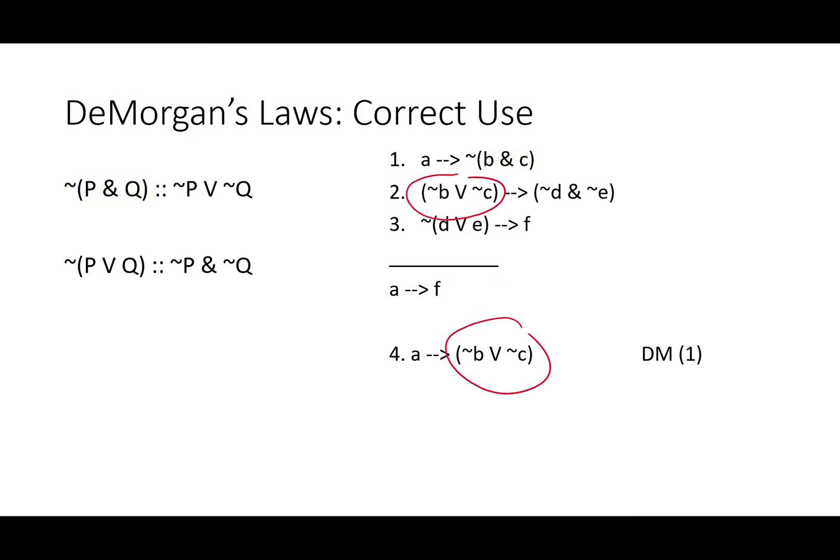So we can DeMorgan line one and we get if A then not B or not C. Well, now they match. We've applied it to line one, we've taken that negation, spread it out, and we've switched our ampersand into a V. If we wanted to, we could just use DeMorgan's on line two and get it's not the case, if it's not the case, then B and C, then not D and not E. It doesn't really matter which one we do. So we'll stick with DeMorgan in line one. It's perhaps more intuitive.